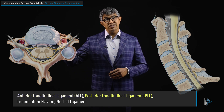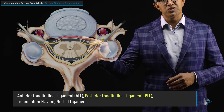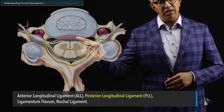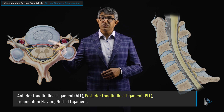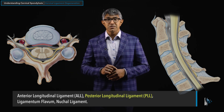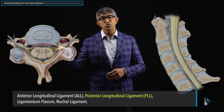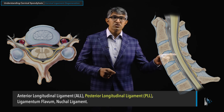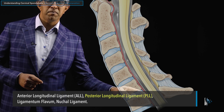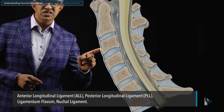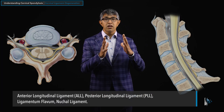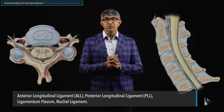There is a similar structure not in the front, but in the back part, called the posterior longitudinal ligament. The PLL runs in the back part of the vertebral bodies, in front of the spinal canal. You can see the posterior longitudinal ligament running right down the back part of the bodies, and together the ALL and PLL sandwich the spinal column, giving it flexibility from the front and the back.